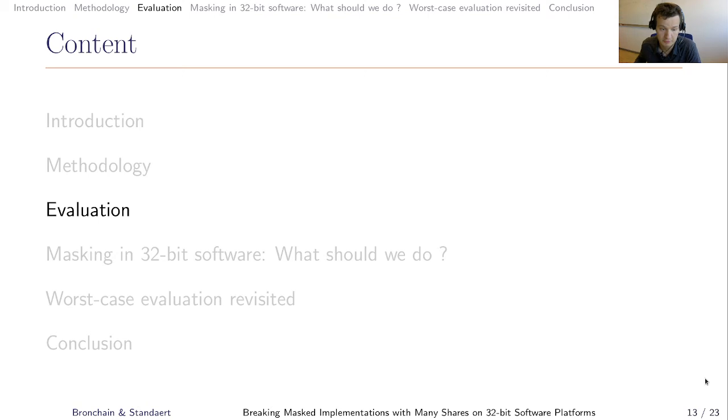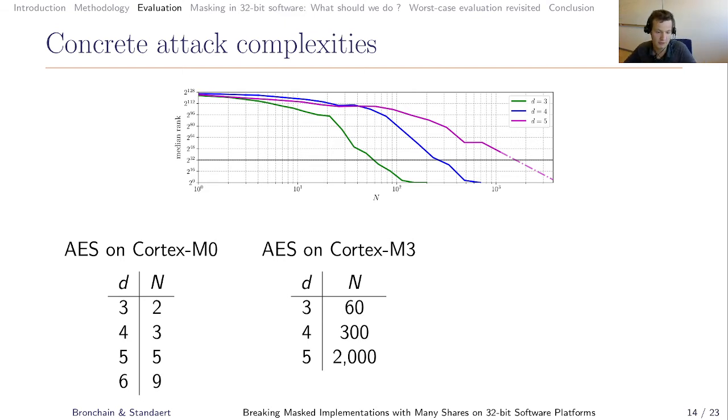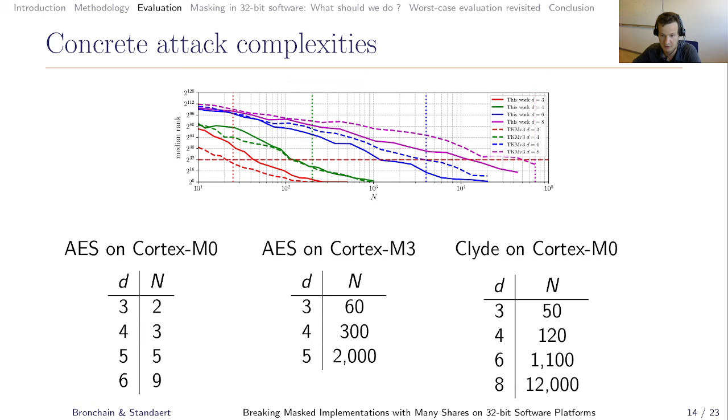What are the concrete results of our methodology on the investigated implementations? First, we look at concrete attacks. On this graph here, you have on the x-axis the number of traces used by the adversary, and on the y-axis, you have the median key rank, which is the remaining entropy of the key. We see that if you increase the number of shares, from three to six here, you also increase the attack complexity N. And here, with nine traces, you are able to break the six-share implementation of AES running on Cortex-M0. If you move on a Cortex-M3, then things get better, and with 2000 traces, we are able to break five-share implementation. And then, for Clyde on Cortex-M0, which is the CHES 2020 dataset, we are able to break eight-share implementation with 12,000 traces.